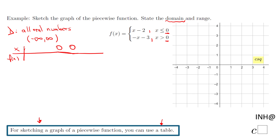The first zero corresponds to the first piece. I'll evaluate f(0): since 0 belongs to the first piece (x ≤ 0), we get 0 minus 2, which equals negative 2. So the point is (0, −2), and I'll plot that on the graph.